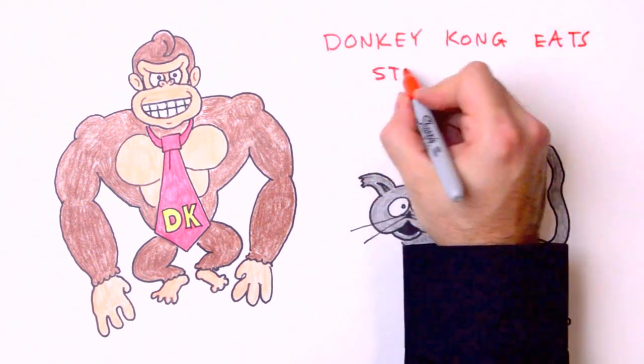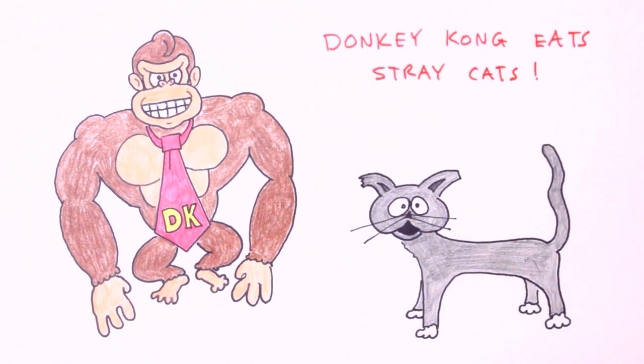Donkey Kong eats stray cats. No, it's not very humane, nor is it even accurate. Everybody knows that DK is a strict bananavore. But such a hilariously graphic mnemonic device is pretty hard to forget. And that's the mark of a good mnemonic device.